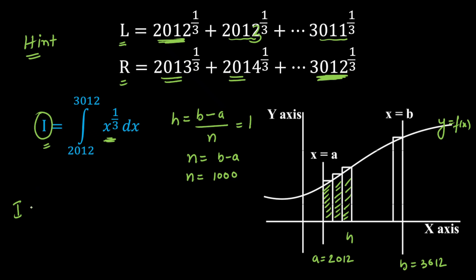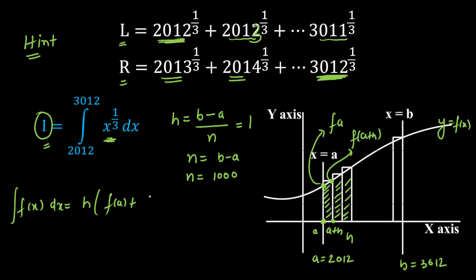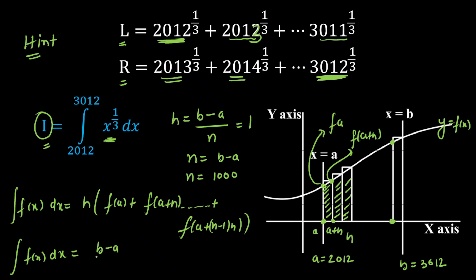The general expression: the integration of f(x) dx can be written as the width of the rectangle multiplied by the height — the height being the functional value. Starting with f(a), as we increase the x-coordinate from a to a+h, the function value changes. The next value is f(a+h), and so on. The last term height equals f(a + (n−1)·h). So the integral of f(x) dx equals h, which is (b−a)/n, multiplied by f(a) + f(a+h) + ... + f(a + (n−1)·h).